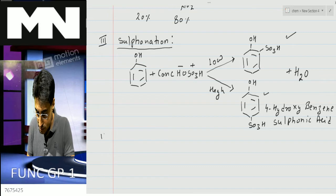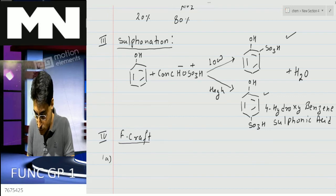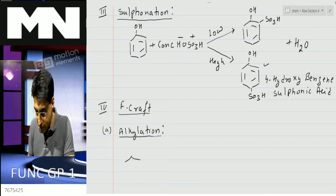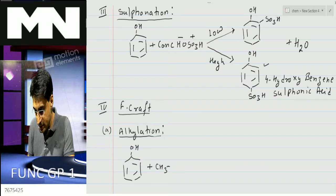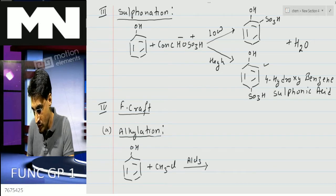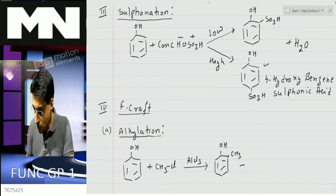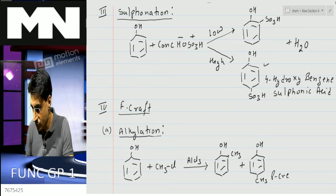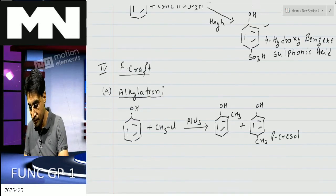Next we see Friedel-Crafts alkylation and acylation. In Friedel-Crafts alkylation, phenol is reacted with CH3Cl in the presence of AlCl3. We get ortho-cresol or para-cresol in the same ratio of 80:20 in favour of para-cresol.